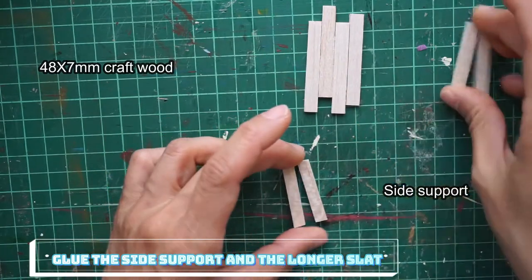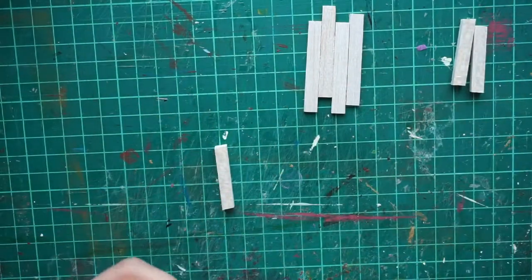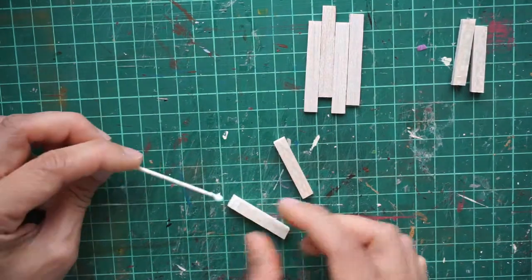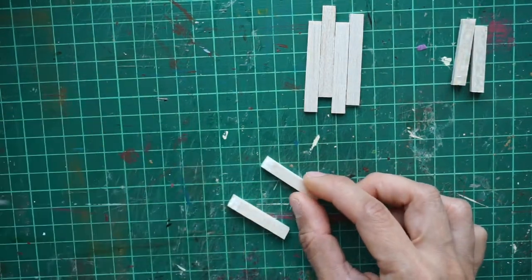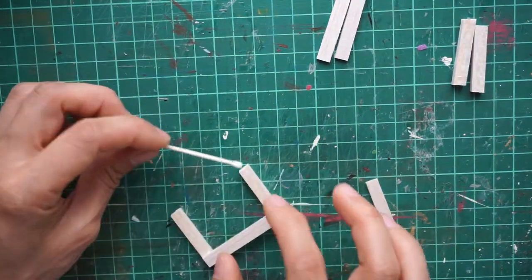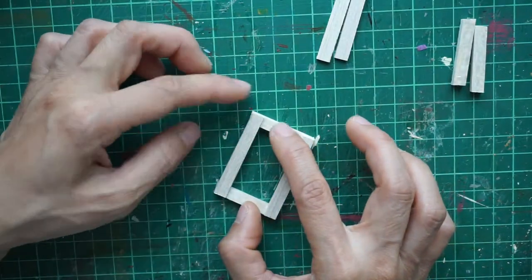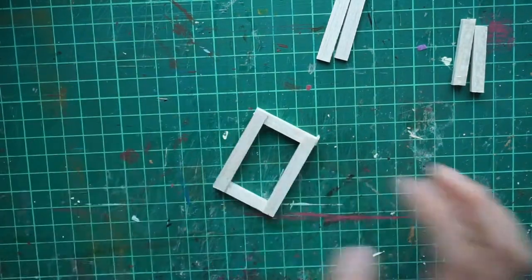First we are going to glue together the side support and the 48 by 7 millimeter craft wood. I assembled the slats by applying glue on one side of the side support and then followed by gluing the other end. After that, you can glue the two remaining slats in the middle making sure you have even spacing between.